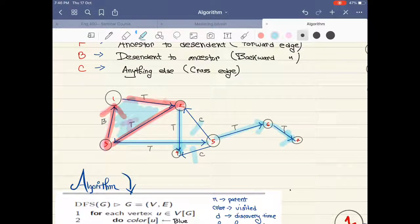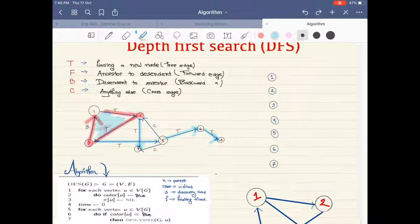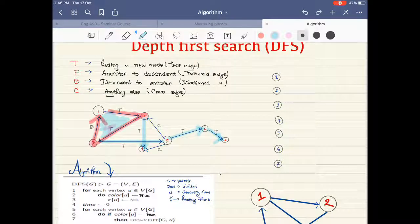So we would be left with these nodes. They don't fall in any case, right? Five is not the child of two, so we can't put backward edge here. And similarly, five is not the child of four, so we can't put backward edge here. So these two would be considered as cross edge.